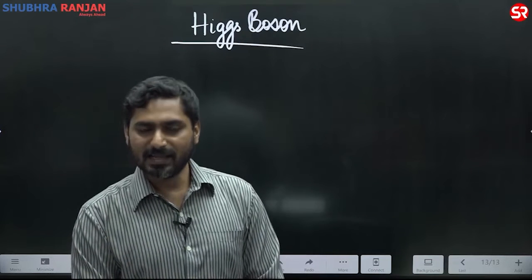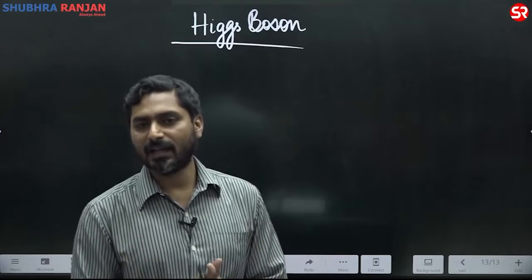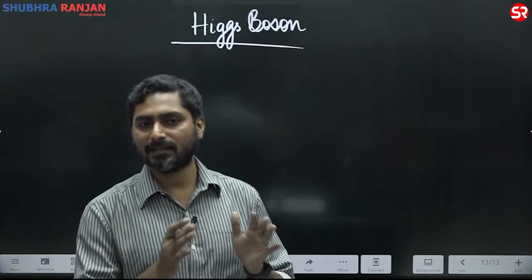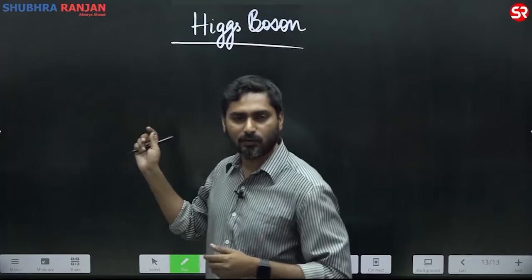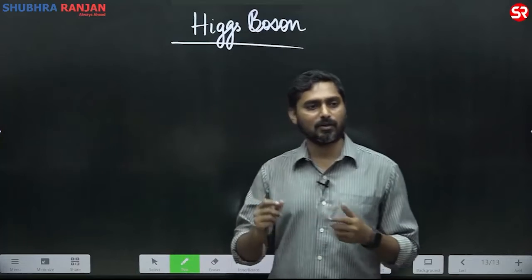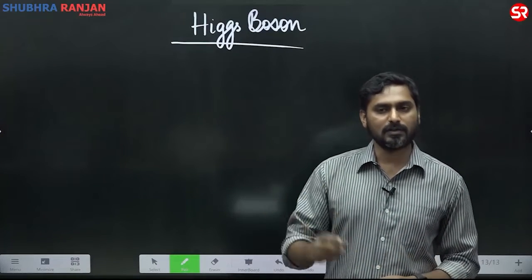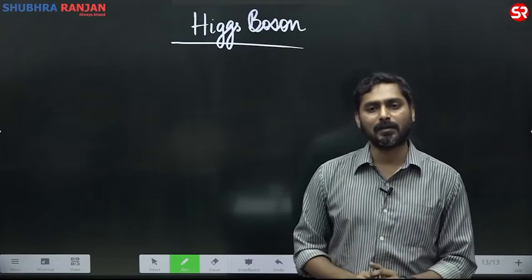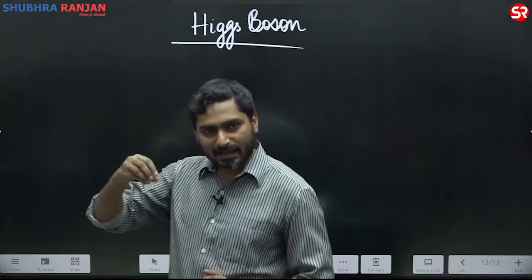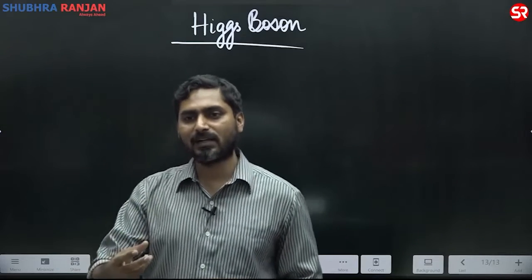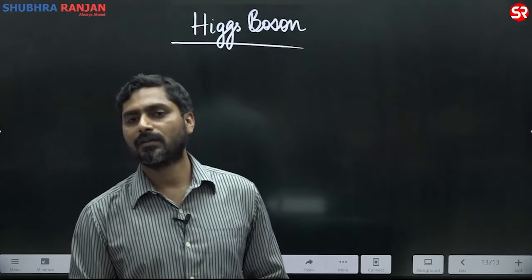Just like gravity, which is present everywhere and invisible, similarly there is the Higgs field. All fundamental particles — the quarks, the electrons, the leptons, the protons, the neutrons — interact with the Higgs field. An electron interacts less with the Higgs field, so its mass is less than that of a neutron.